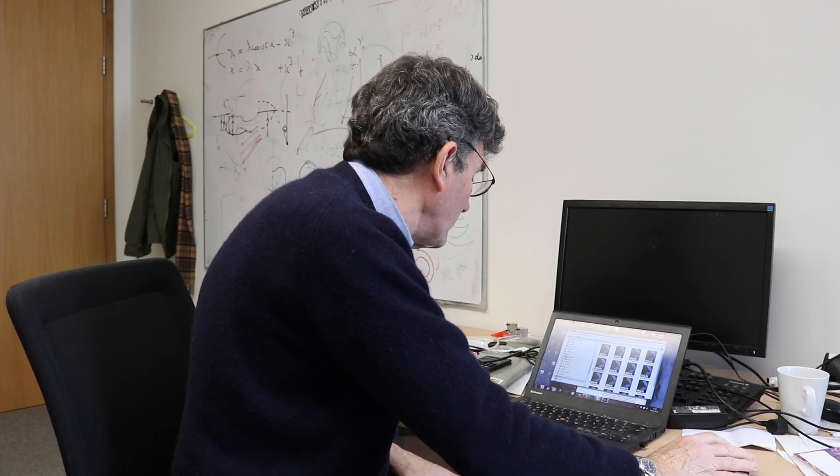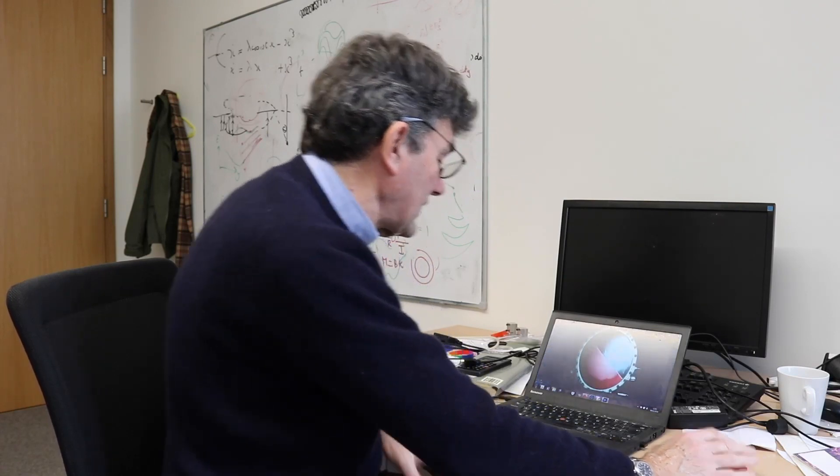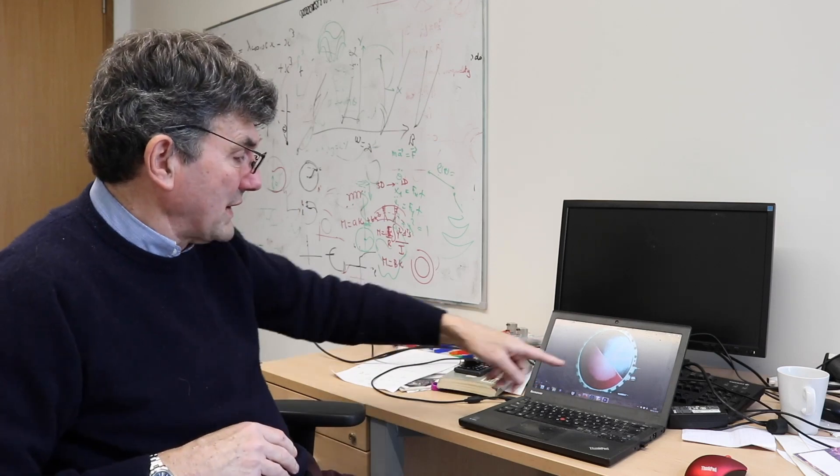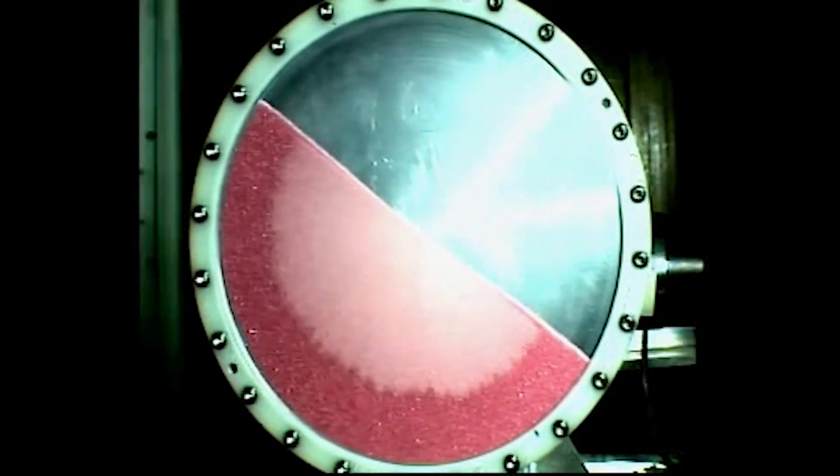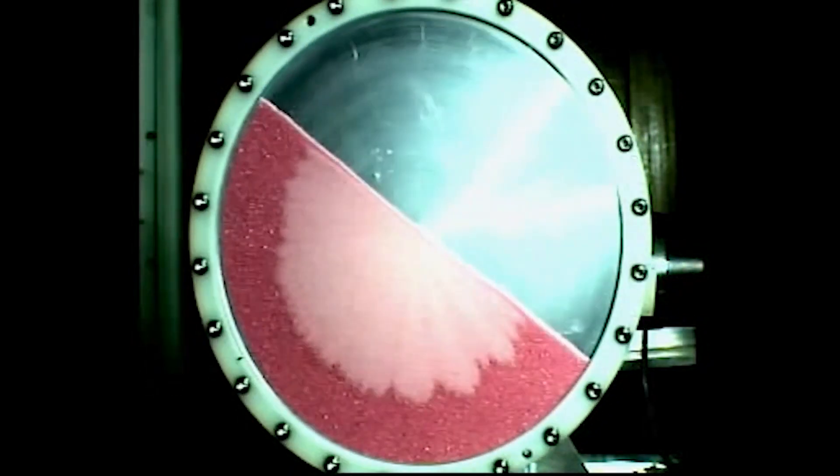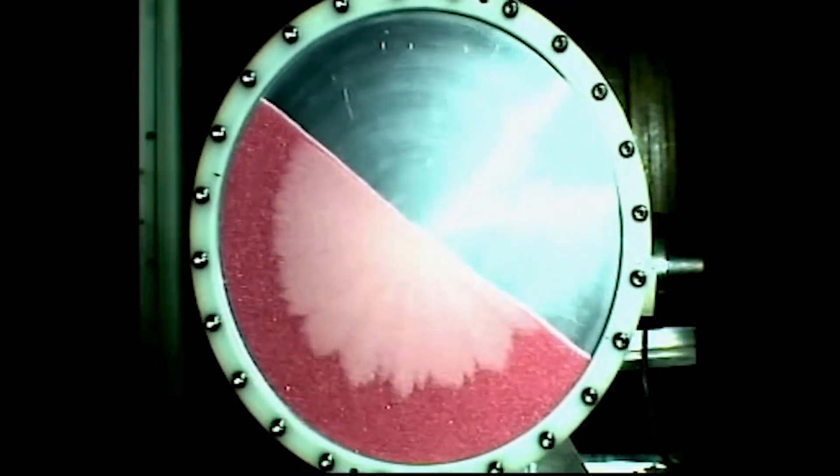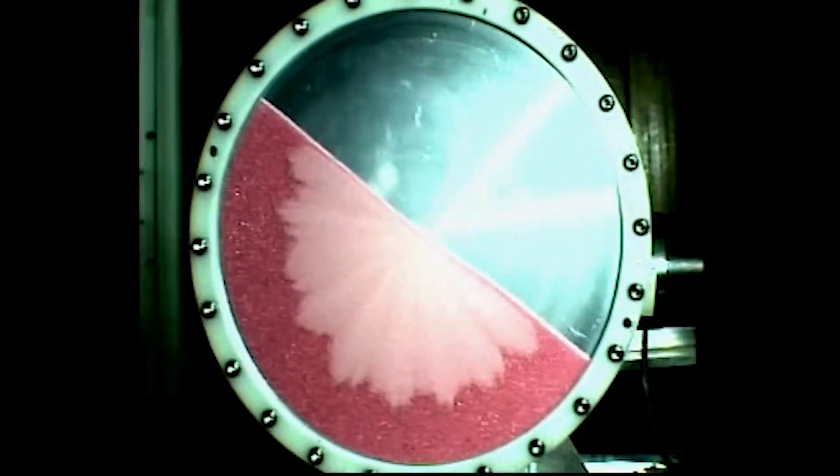Sometimes you can describe the motion of granular materials as if it were a fluid, and a particularly striking example of where this segregation and fluid-like behavior take place is in a rotating drum such as this, because there's a wave motion that propagates—you'll see it more clearly in a minute—up and down the surface of this material here, and you see it forms this nice flower-like pattern on the surface.